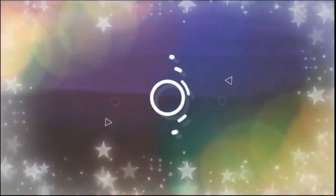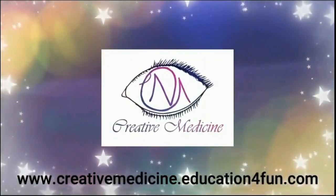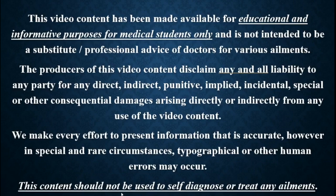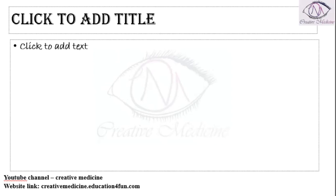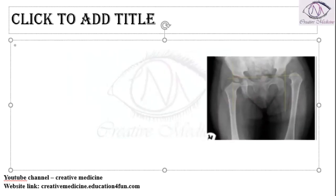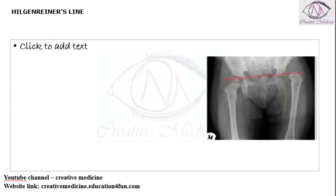Hello friends, welcome to Creative Medicine. In this lecture we will learn about the Hilgen-Reiner line. The Hilgen-Reiner line is the line connecting the two acetabuli. This is the acetabulum and this is the acetabulum, and the line connecting the two acetabuli is called the Hilgen-Reiner line.